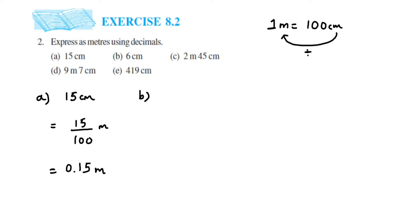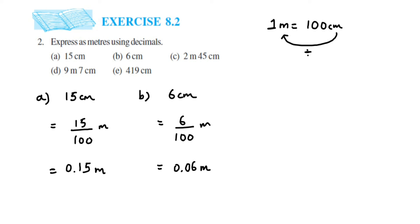For 6 centimeters, again divide by 100. We have two zeros in the denominator. We have only one digit, so we need two places. We put a 0 before, place the decimal point, then 0 — giving 0.06 meters. If you have only a single digit, you add zeros as needed before placing the decimal point.